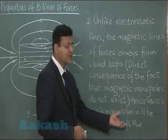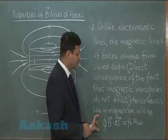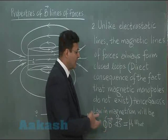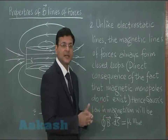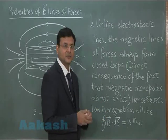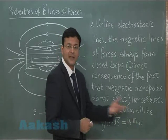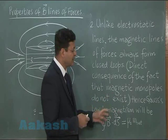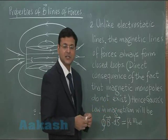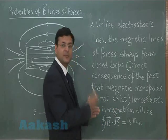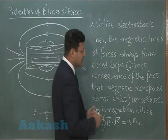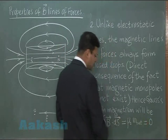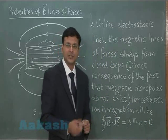But the problem is that monopoles do not exist. That expression would apply if monopoles existed. But since net magnetic charge does not exist — wherever there is a +m there will be a −m — the net magnetic charge is always zero. So the realistic Gauss's law in magnetism is: ∮ B · dS = 0.